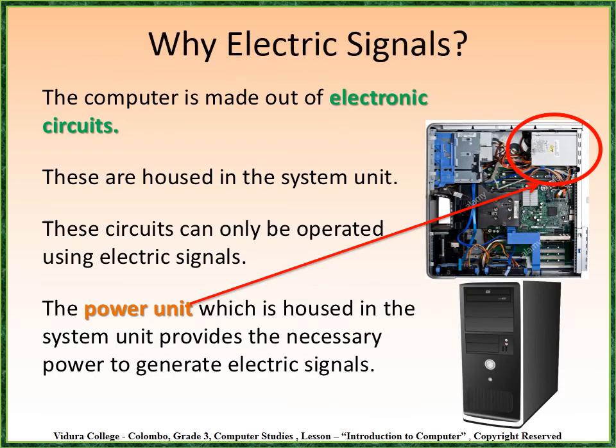Why electric signals? The computer is made out of electronic circuits, which are housed in the system unit. These circuits can only be operated using electric signals. The power unit housed in the system unit provides the necessary power to generate electric signals.